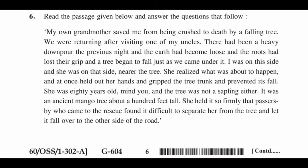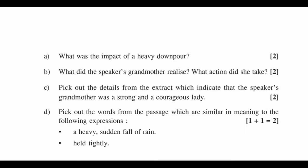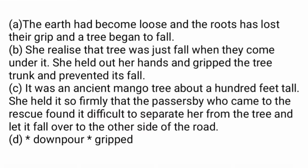Question 6: Read the passage and answer. A. What was the impact of the heavy downpour? B. What did the speaker's grandmother realize, and what action did she take? C. Pick out details indicating the grandmother was strong and courageous. D. Pick out words similar in meaning to: 1. A heavy sudden fall of rain. 2. Held tightly. Answer A: The earth became loose, roots lost their grip, and a tree began to fall. B: She realized the tree was about to fall on them — she held out her hands, gripped the tree trunk, and prevented its fall. C: It was an ancient mango tree about 100 feet tall; she held it so firmly that passers-by who came to the rescue found it difficult to separate her from it and let it fall to the other side of the road. D: 1. Downpour. 2. Gripped.